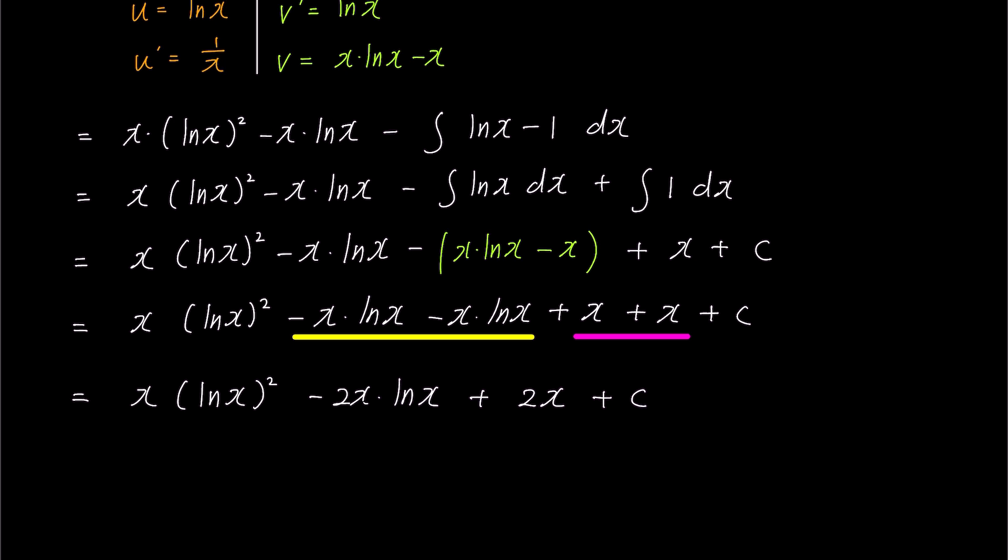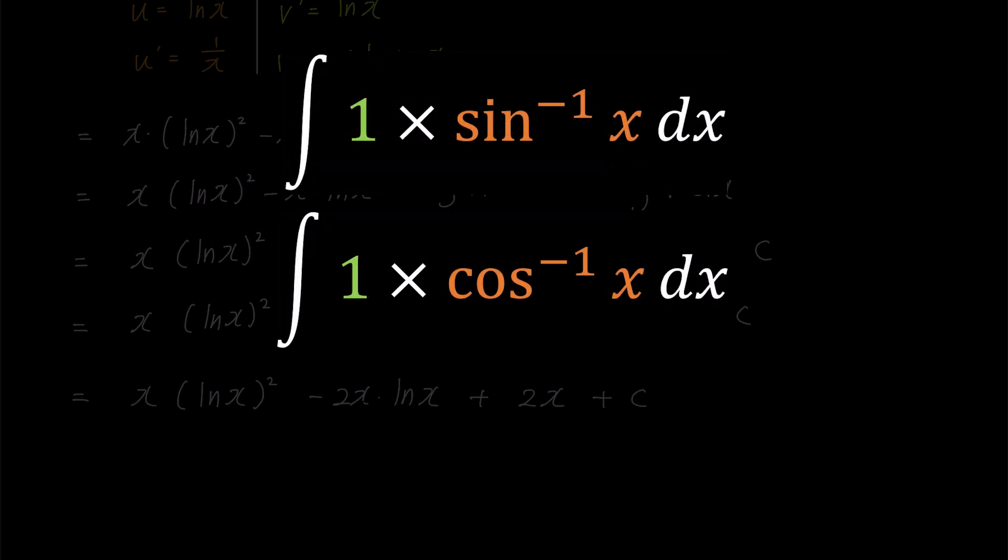Integration by parts is typically used when two terms are multiplied together. But as we've seen, it can also be exceptionally applied when there's only one term involved. This exception applies not only to ln(x) but also the inverse functions of sine, cosine and tangent.